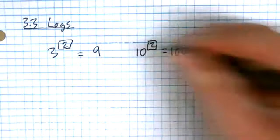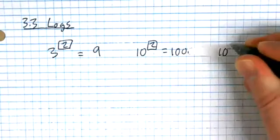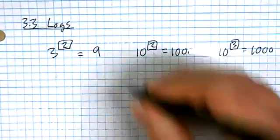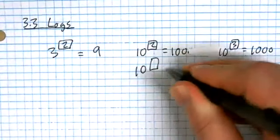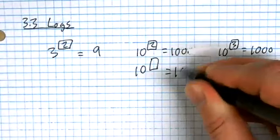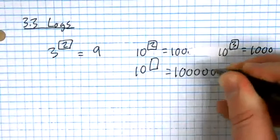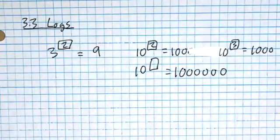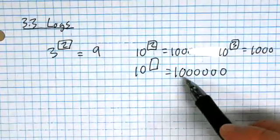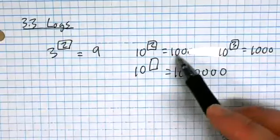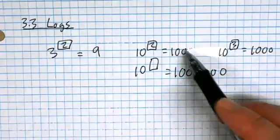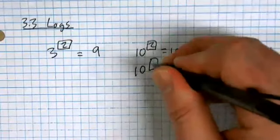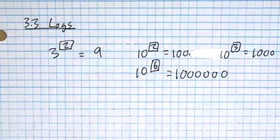What exponent could I put onto a 10 to make it equal to one thousand? Three. What exponent to make it one million? Count the zeros: two zeros is a two, three zeros is a three, six zeros is a six. Okay, you guys had me worried there for a second!